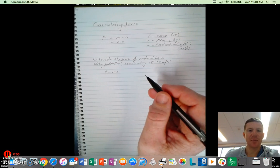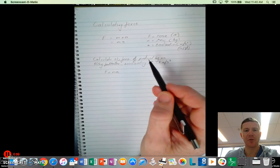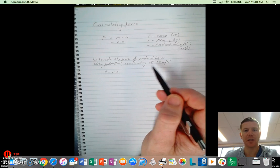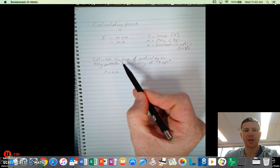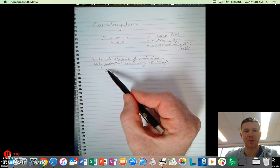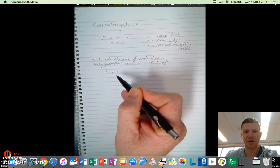So looking at this example here, the question is: calculate the force produced by an 80 kilo footballer accelerating at 8 meters per second. So we see that the question asks us to get force, so we need to make force the subject, which is handy because that's the equation. So you end up with force equals mass times acceleration.